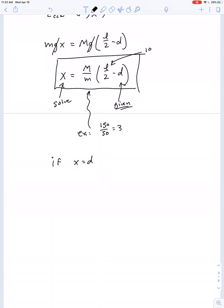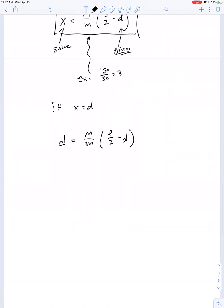So if that's the case, if X equals D then we have D equals M over M times quantity L over 2 minus D. If we rearrange we get L over 2 minus D equals lowercase m over capital M times D.